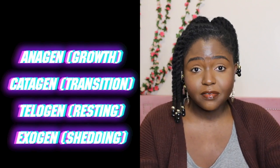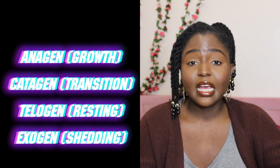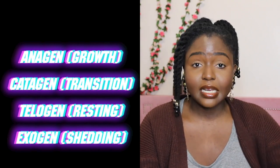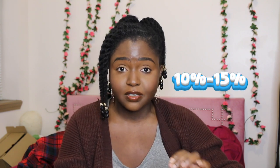We have the anagen phase, which is the growth phase; the catagen phase, which is more like a transition phase; the telogen phase, which is the resting phase; and the exogen phase, which is the shedding phase. I've talked about this before in my genetics video on the relationship between genetics and hair growth. At any given time, different strands on our head are in different phases of growth.